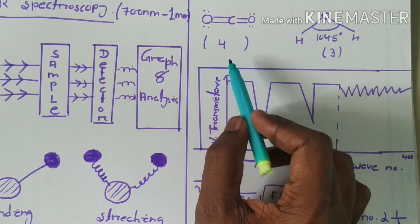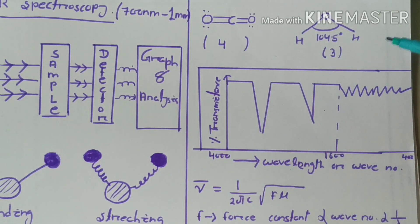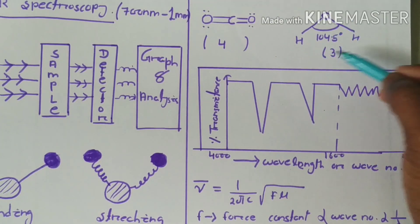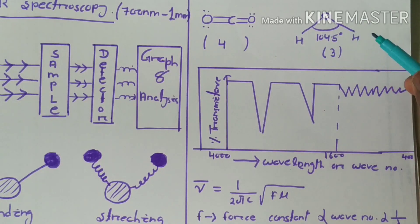If we see the structure of water, this is a nonlinear molecule, so the number of vibrations can be calculated using the formula 3n minus 6. There are three atoms, so three times three is nine, minus six equals three vibrations.